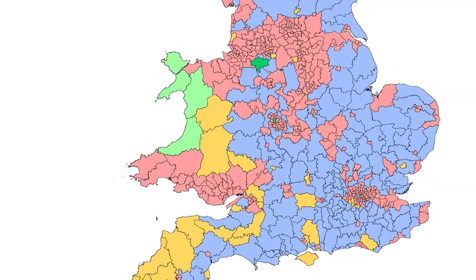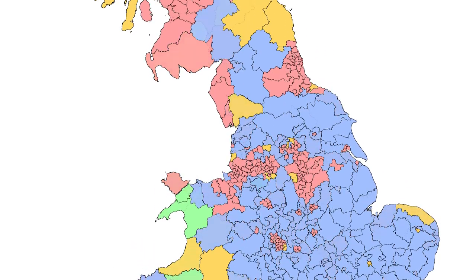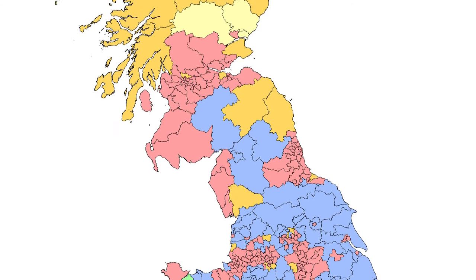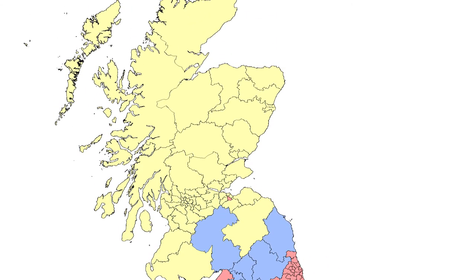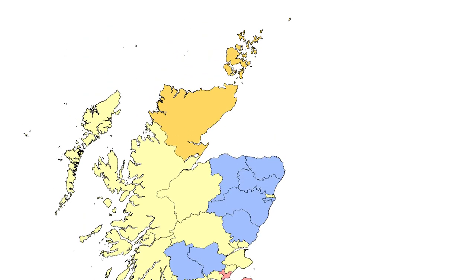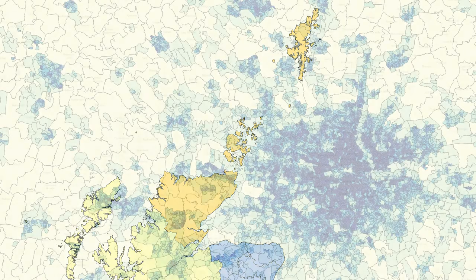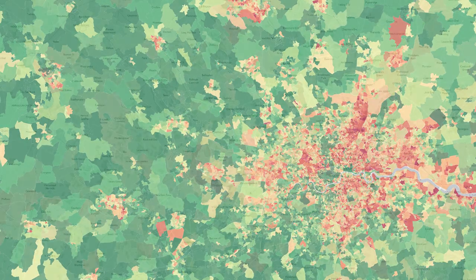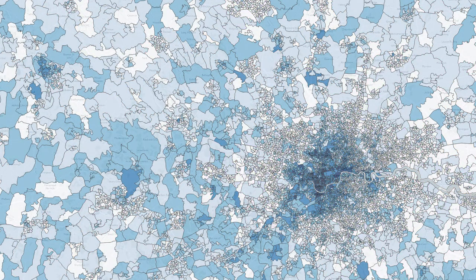If you have information that relates to areas, then you can display these as well. For example, with the general election, there's always a map showing areas of the country coloured to match the party that has won. This is called a choropleth, or thematic map, where the map is coloured according to a theme — in this case the winning party. However, this could also be population, unemployment, crime, or anything that can be linked to a geographic area or polygon.